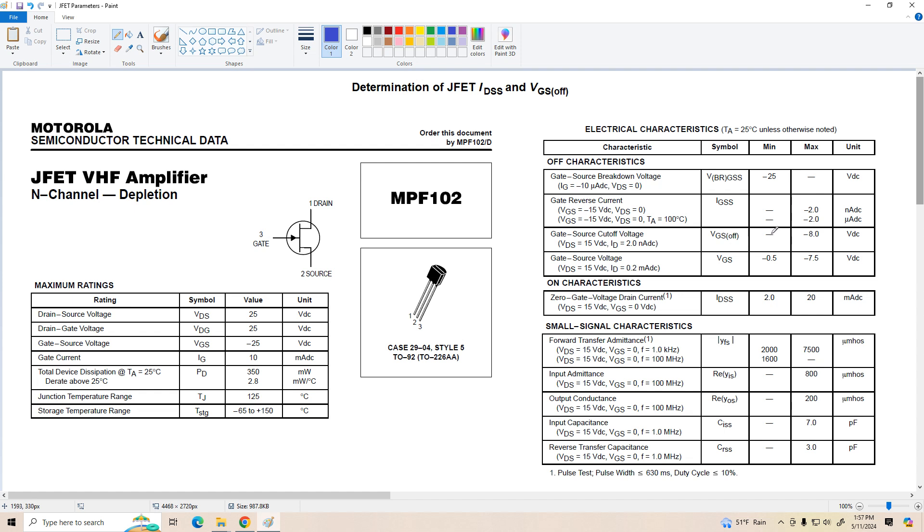VGS-OFF doesn't have a minimum value listed, but the max is negative eight volts. I've never seen one that high, but I guess it can happen.